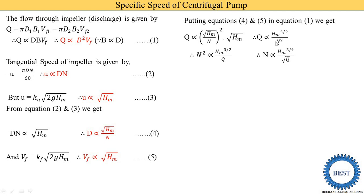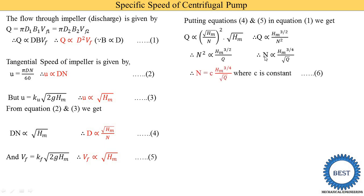Converting this equation into the form of N: N² ∝ Hm^(3/2) / Q. Taking the square root of both sides, N ∝ Hm^(3/4) / √Q. Removing the proportionality and adding constant C: N = C · Hm^(3/4) / √Q. This is equation 6.